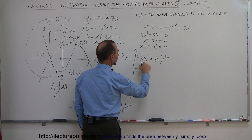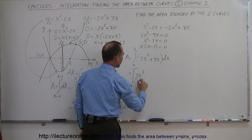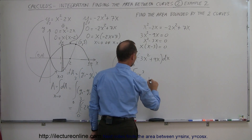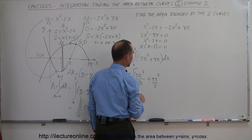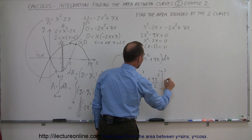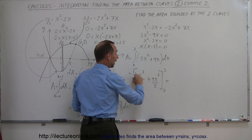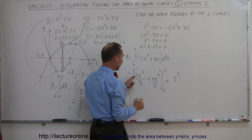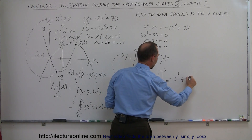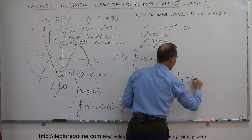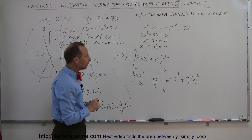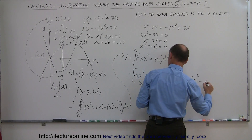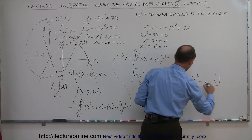Evaluating the integral: integrating minus 3x squared gives minus x cubed (the threes cancel), and integrating 9x gives plus 9x squared over 2. Evaluating from 0 to 3: plugging in the upper limit gives minus (3 cubed) plus (9 over 2) times (3 squared), which is minus 27 plus 40.5. Plugging in the lower limit gives zero minus zero. So we subtract zero.